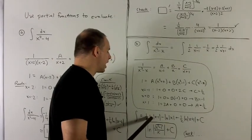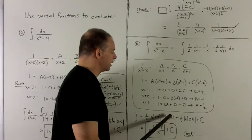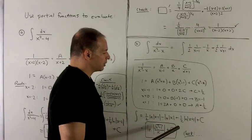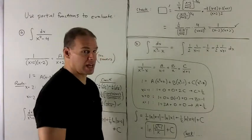So a half natural log absolute value of x minus 1, minus natural log absolute value of x, plus a half natural log absolute value of x plus 1, plus a constant.